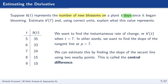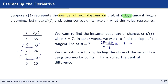To estimate b prime of 7, we take the two closest surrounding points and calculate the average rate of change, using it as an estimate for the slope of the tangent line at t equals 7. So we take the second y value, 15, minus the first y value, 33, and divide by the second x value minus the first x value. That gives us negative 9. So b prime of 7 is approximately negative 9. We say approximately because we're using the average rate of change to estimate the instantaneous rate of change.